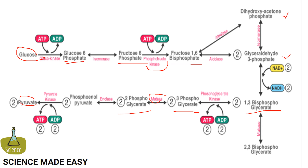In the ninth step, the enzyme enolase removes a water molecule from 2-phosphoglycerate to form phosphoenol pyruvate. In the tenth and last step, the phosphate from phosphoenol pyruvate is transferred to ADP to form pyruvate and ATP by the action of the enzyme pyruvate kinase.